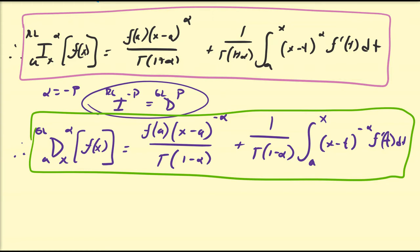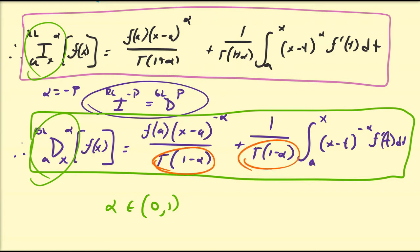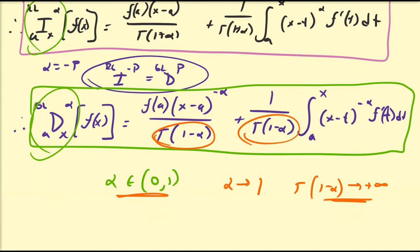For fractional integrals, we only need alpha to be between 0 and 1 for both the Riemann-Liouville and the Grünwald-Letnikov operators, because we have the connection between integer orders and fractional orders. As long as alpha is between 0 and 1, the gamma function is well-behaved. Keep in mind that as alpha approaches 1, gamma of 1 minus alpha goes to positive infinity, so you should not use alpha equal to 1 or higher. This is a nicer analytic representation for the Grünwald-Letnikov derivative operator.